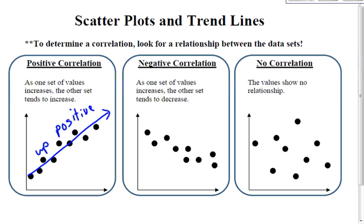A negative correlation is when one set of values increases and the other set tends to decrease. So I'm going to draw my trend line, and I'm going to try to go through the middle of all the points.